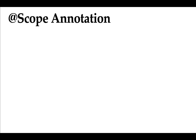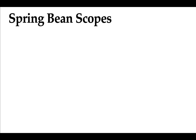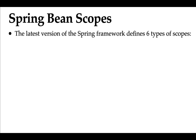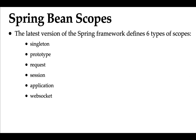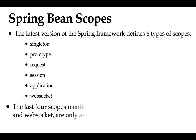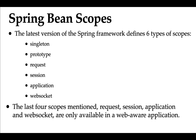Hi everyone, welcome back. In this video let us take a look at the @Scope annotation. The latest version of Spring Framework defines six types of scopes: singleton, prototype, request, session, application, and WebSocket. The last four scopes — request, session, application, and WebSocket — are available in web-aware applications.